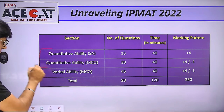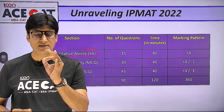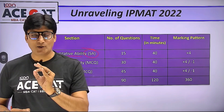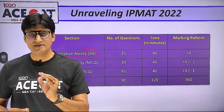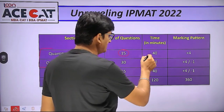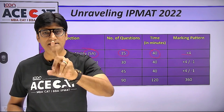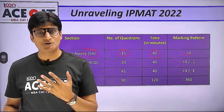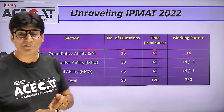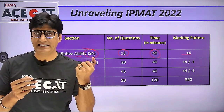As you see on the screen, the first section is Quantitative Ability Short Answer Type, where options are not given — you just type the answer. These are objective questions but without options, so the approach is slightly different. Total 15 questions, 40 minutes of time, marking pattern +4, and the best part is there is no negative marking in this section.